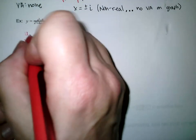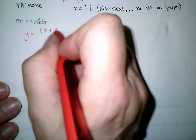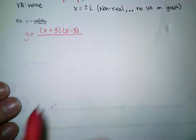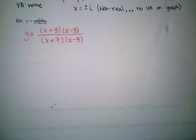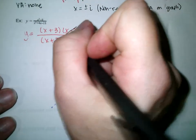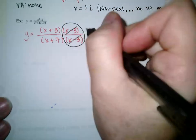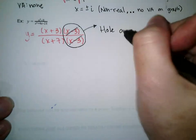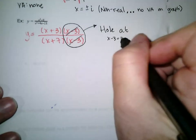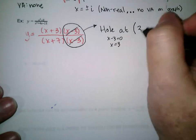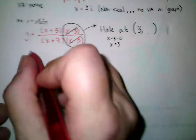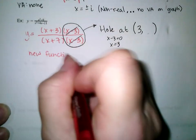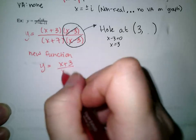We'll start by factoring. The numerator is difference of squares, giving x plus 3 times x minus 3. The denominator factors to x plus 7 times x minus 3. Now that we have it factored, we see a common factor we can cancel. I think of it as making a hole by taking this factor out of the function — so there will be a hole at the x value where x minus 3 equals 0, meaning x equals 3.